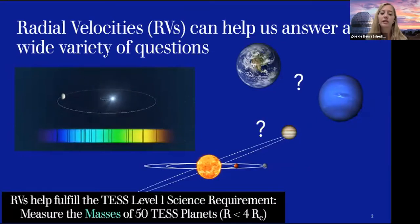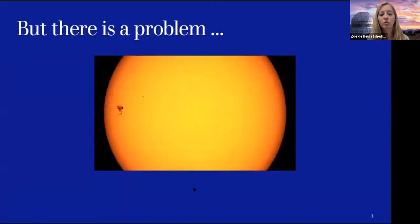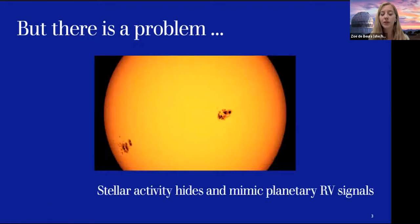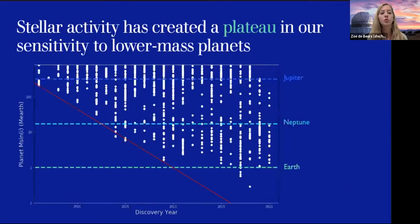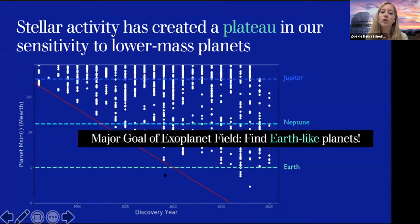Radial velocities can help fulfill the TESS level-one science requirement: to measure masses of 50 TESS planets with radii smaller than four Earth radii. However, there is a major problem — stellar activity. Stellar activity in the form of dark, highly magnetized regions on the stellar surface can hide or mimic planetary signals. This has created a plateau in our sensitivity to lower-mass planets. Looking at planet masses discovered as a function of year, from 2010 onwards there has been no notable increase in precision to smaller planets.